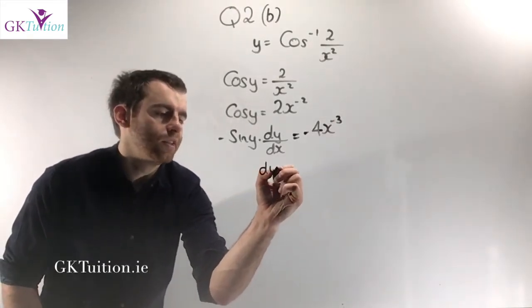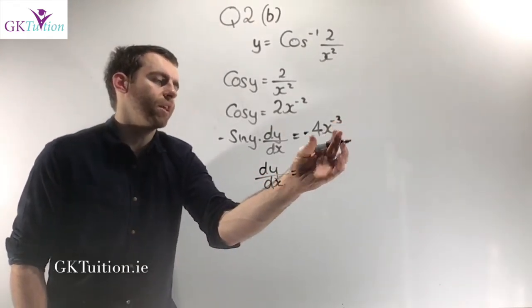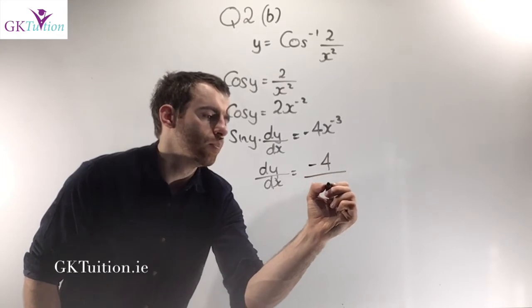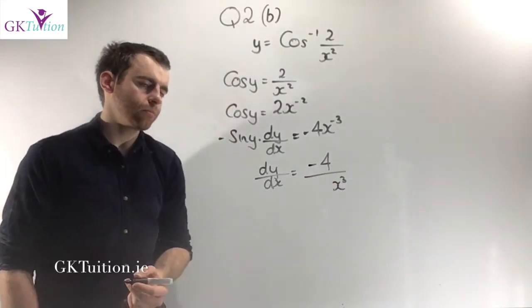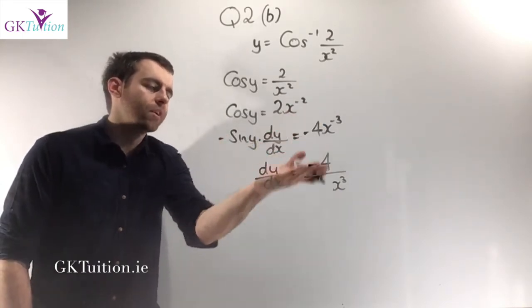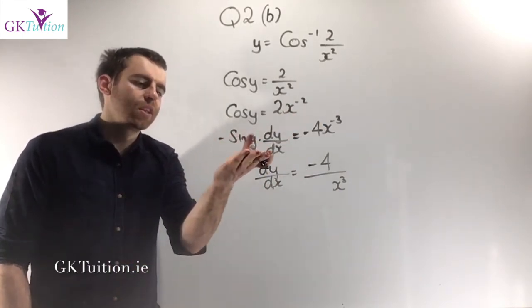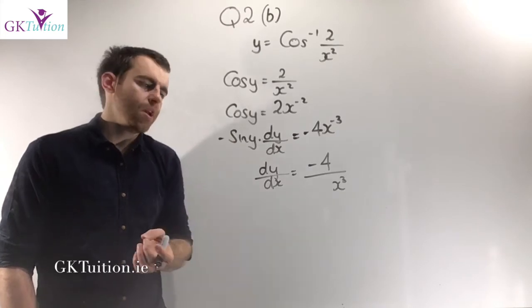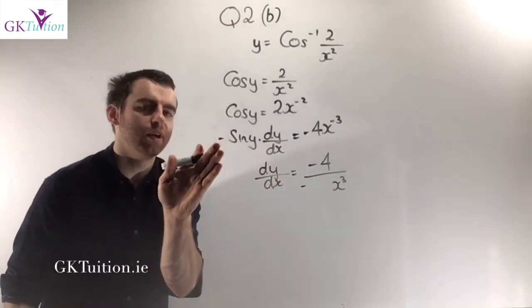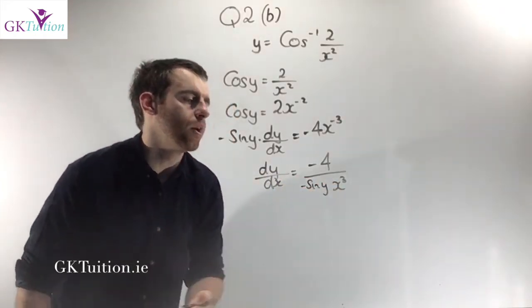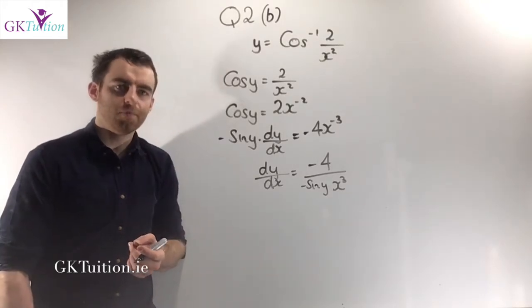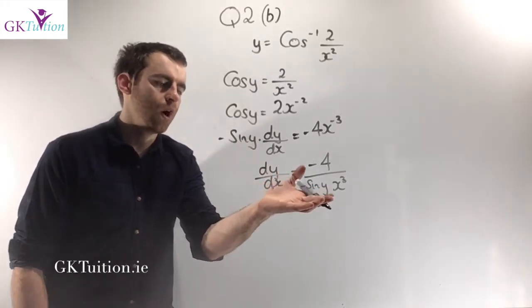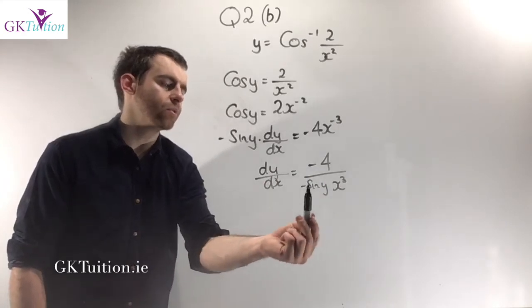The goal in differentiation is to isolate dy dx. Simplify the right hand side: x to the power of minus 3 can be written as minus 4 over x cubed. To isolate dy dx, divide both sides by minus sine y. However, this leaves dy dx in terms of y, not x, so we need to express sine y in terms of x.